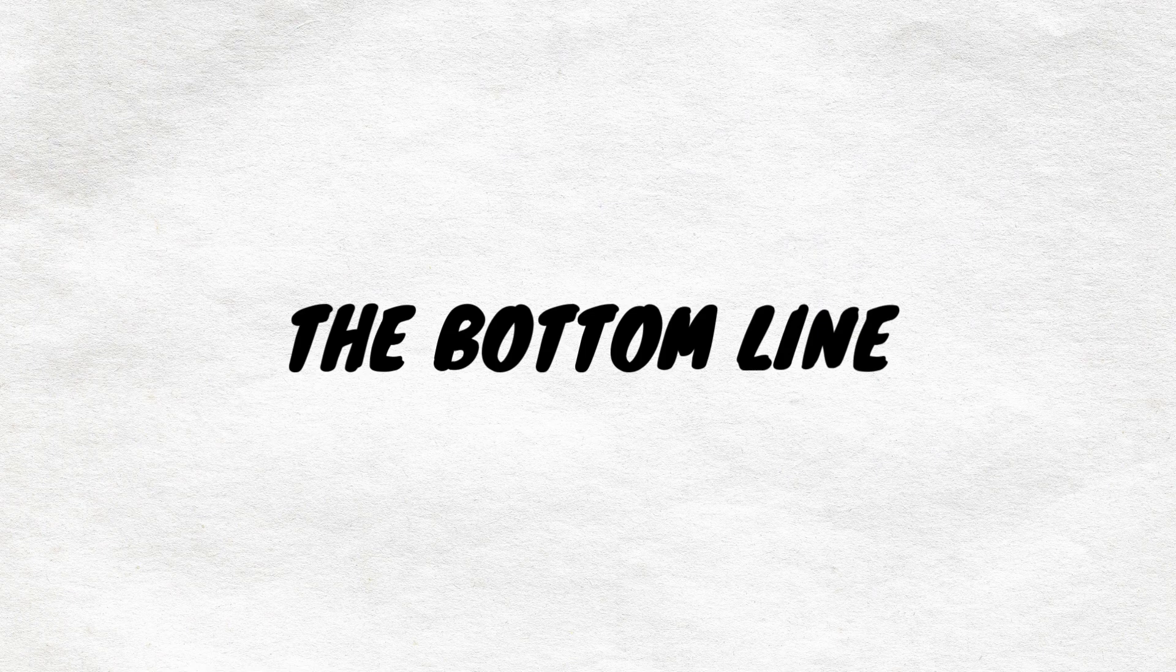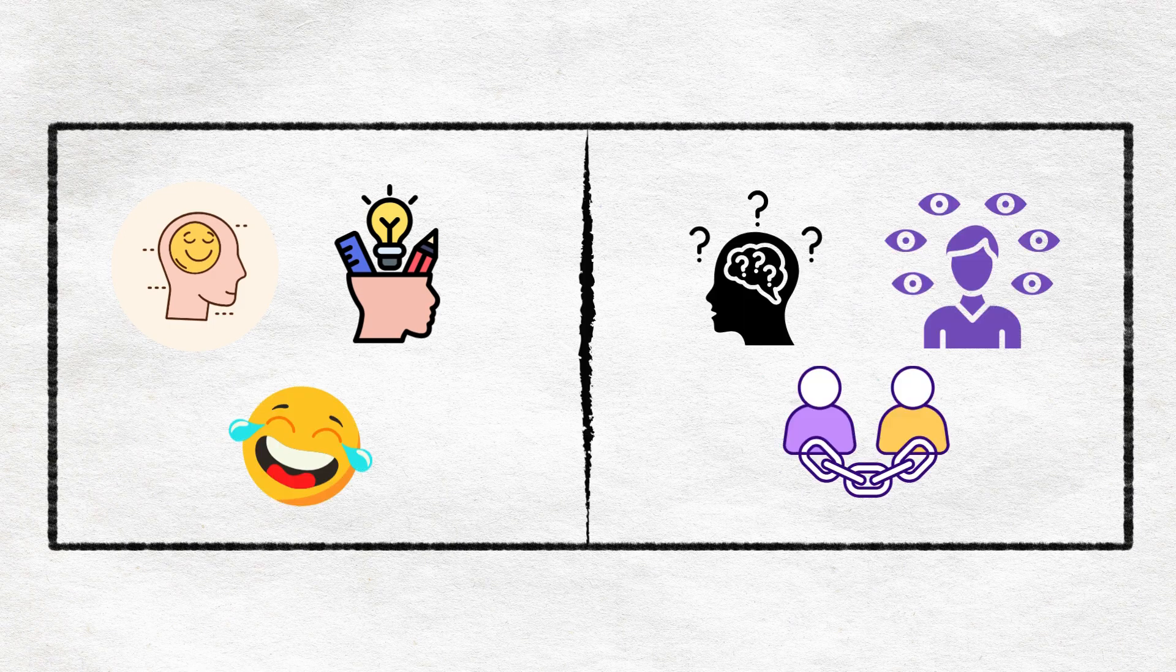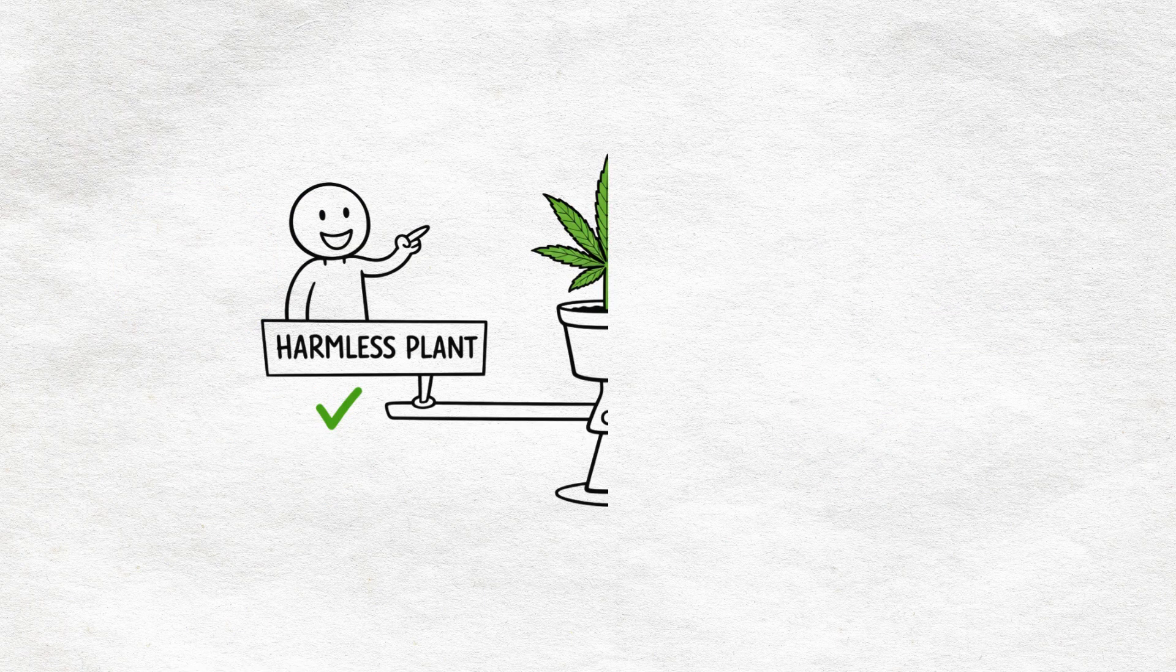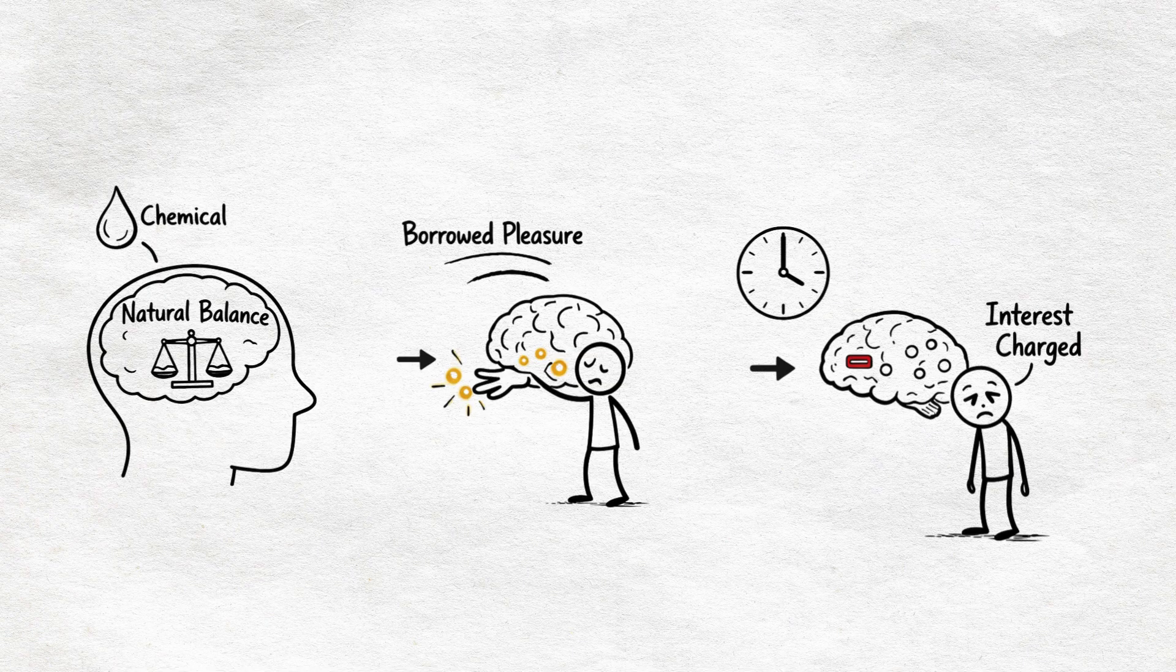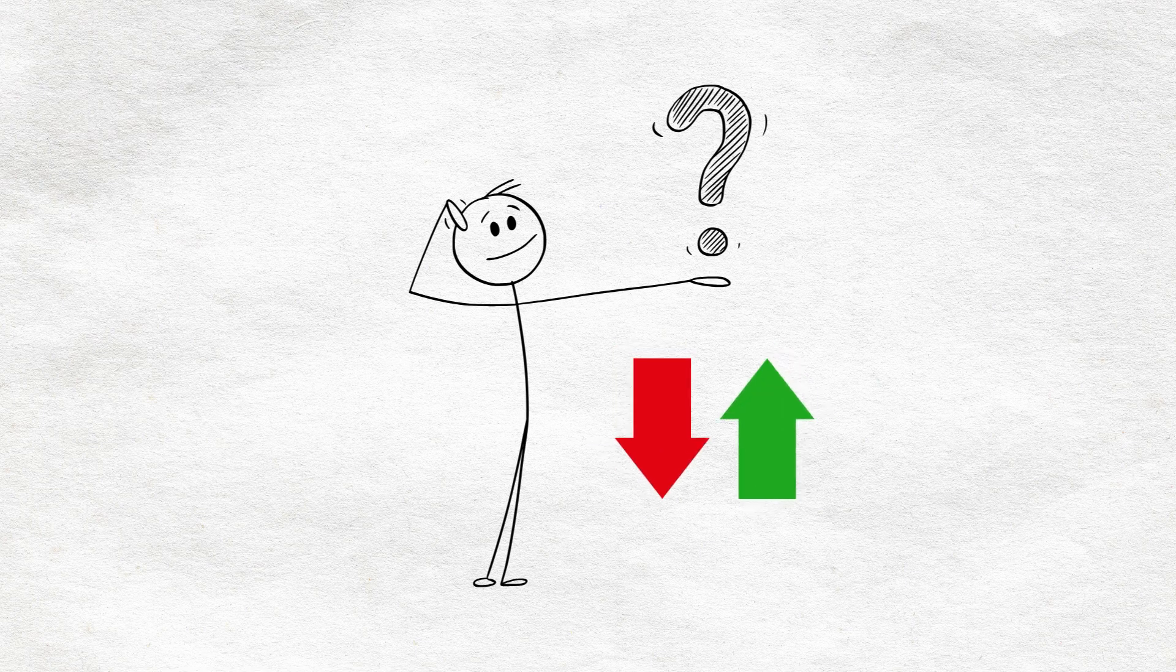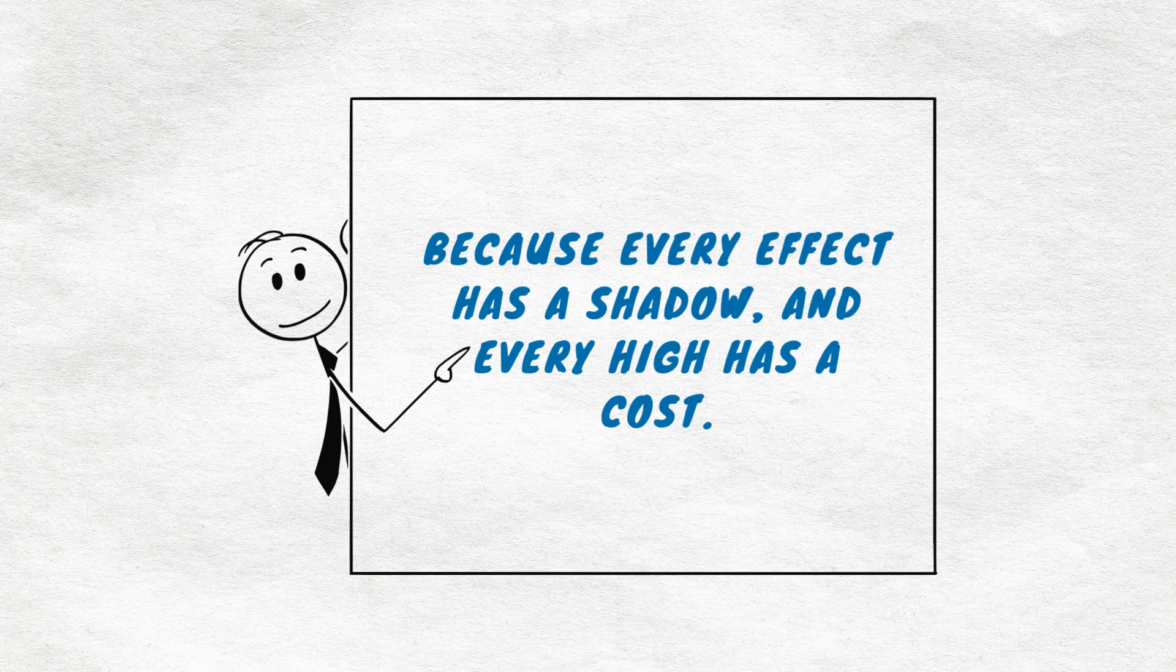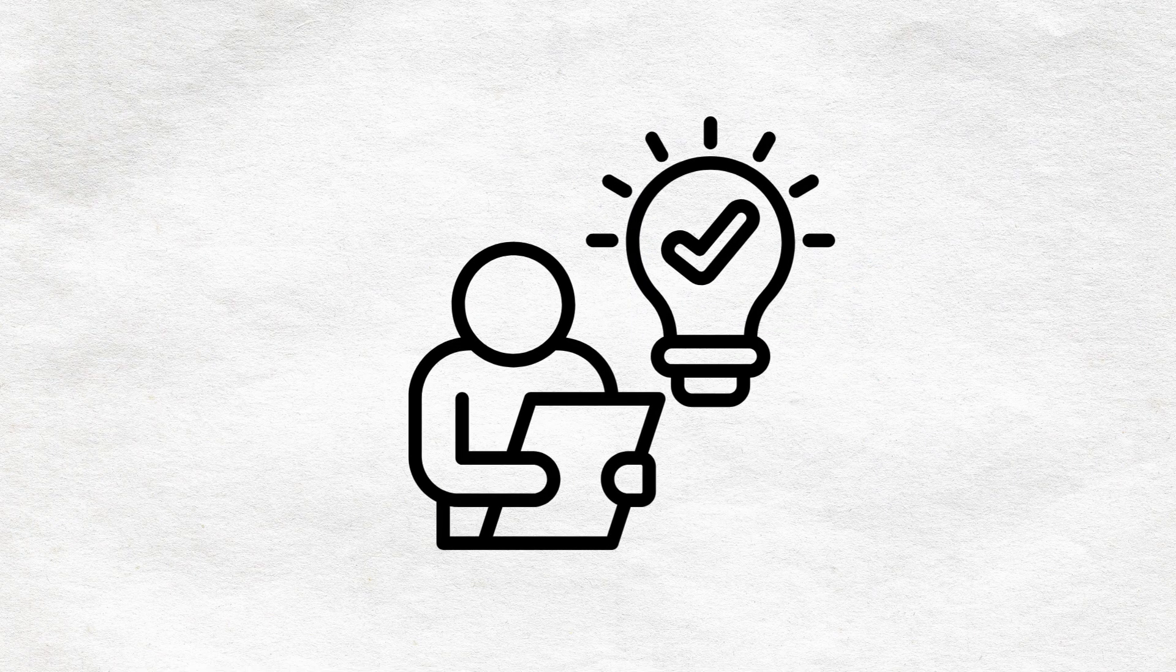The bottom line. So that's the full picture: euphoria, creativity, and laughter on one side; memory loss, paranoia, and dependence on the other. It's not the harmless plant some claim, but it's not the danger others make it out to be. It's a chemical that borrows from your brain's natural balance and charges interest later. The question isn't whether these effects are real, it's whether you understand the trade-offs. Because every effect has a shadow, and every high has a cost. This substance doesn't define you, but it does change you, and that's something worth understanding.